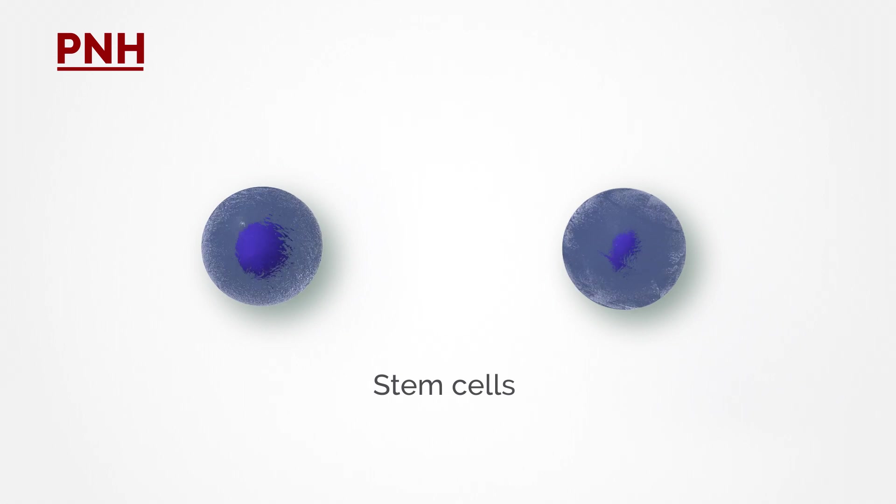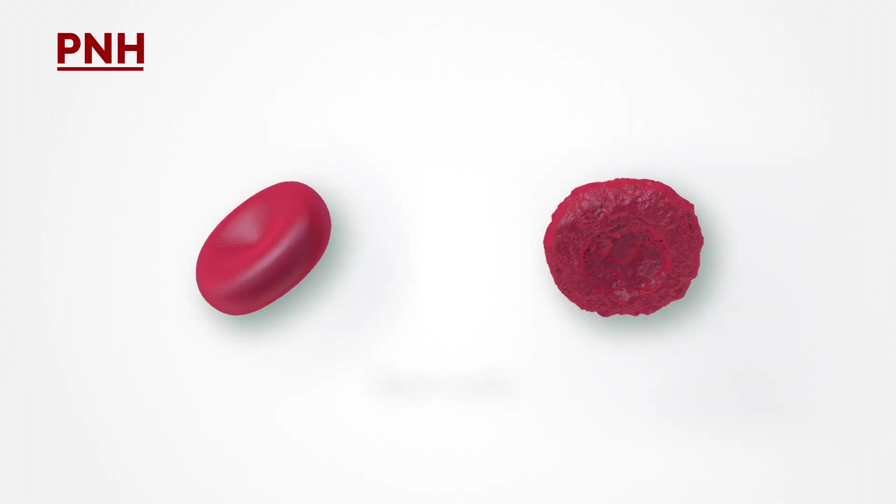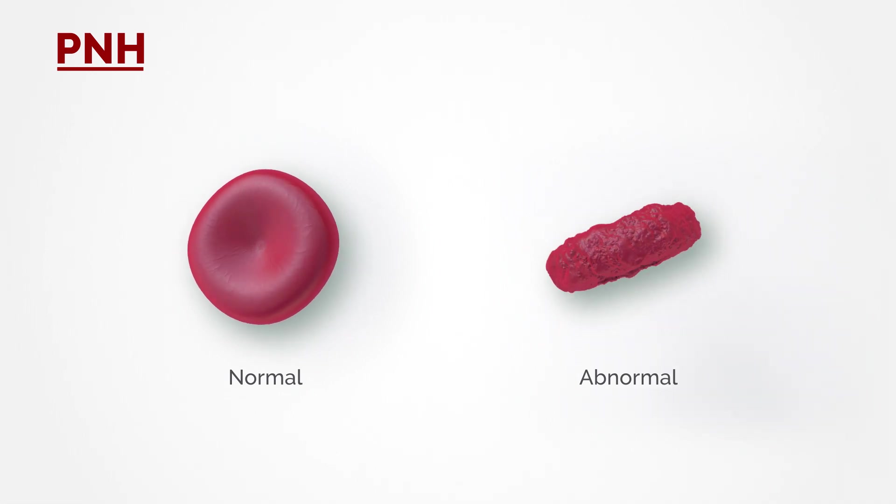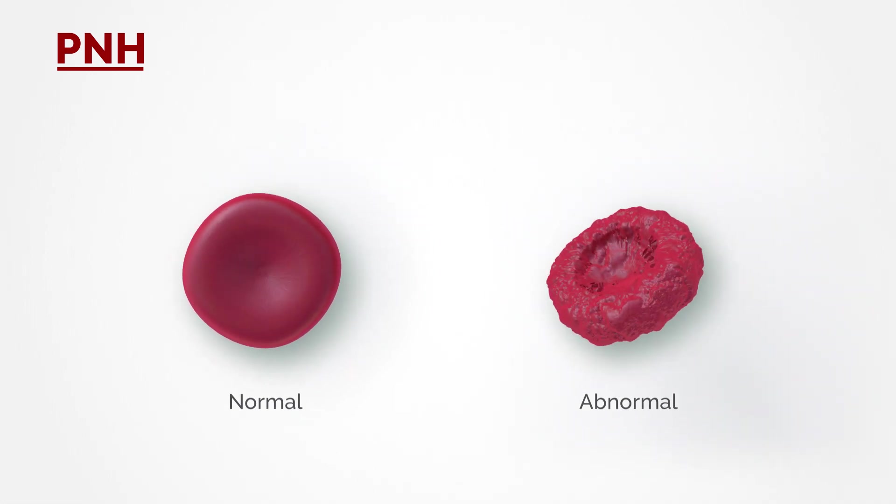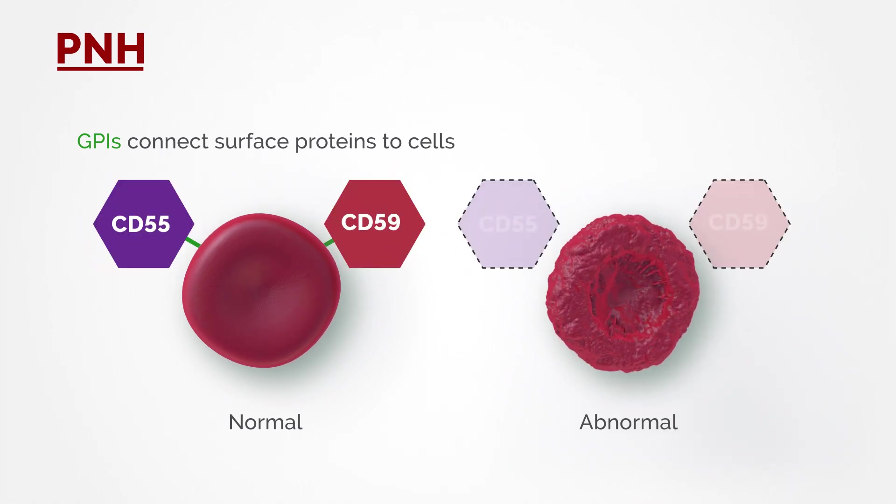In PNH, stem cells acquire a gene mutation which results in the production of abnormal blood cells. These defective red blood cells, white blood cells, and platelets lack the connector, known as GPI, for two important surface proteins, CD55 and CD59, that regulate complement activity.